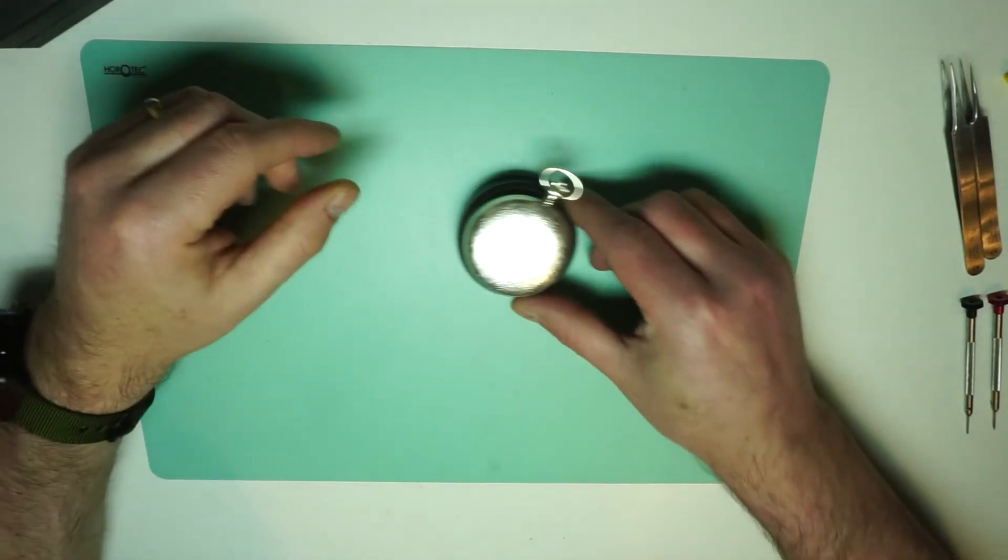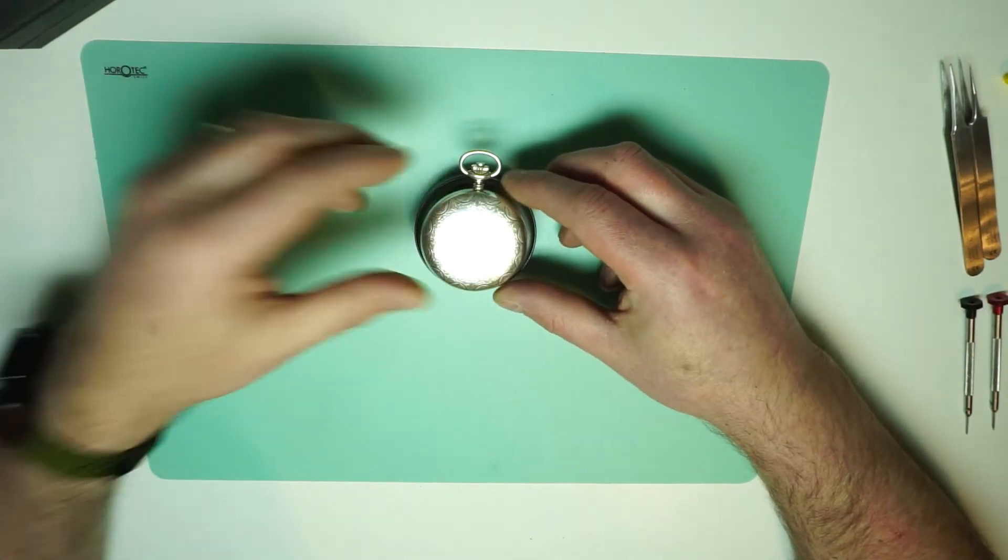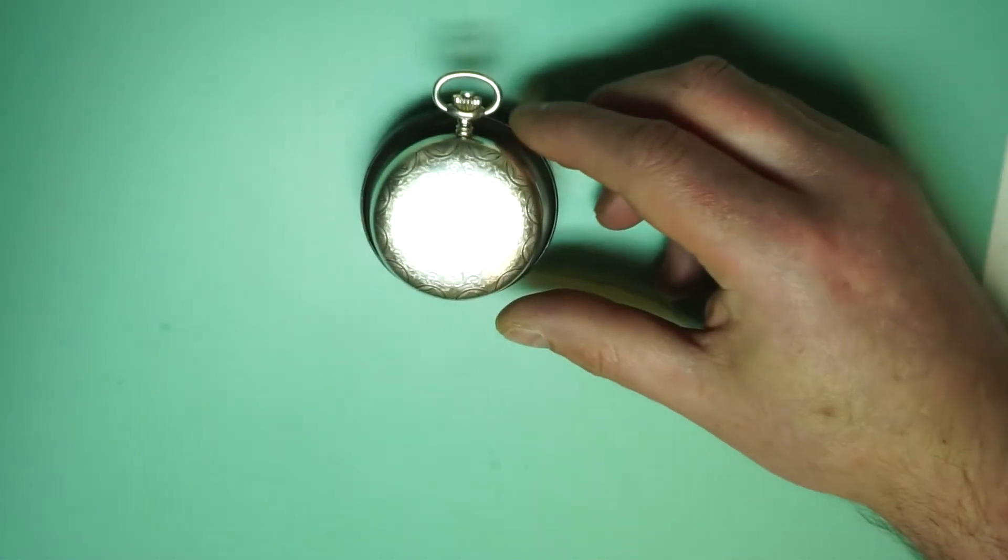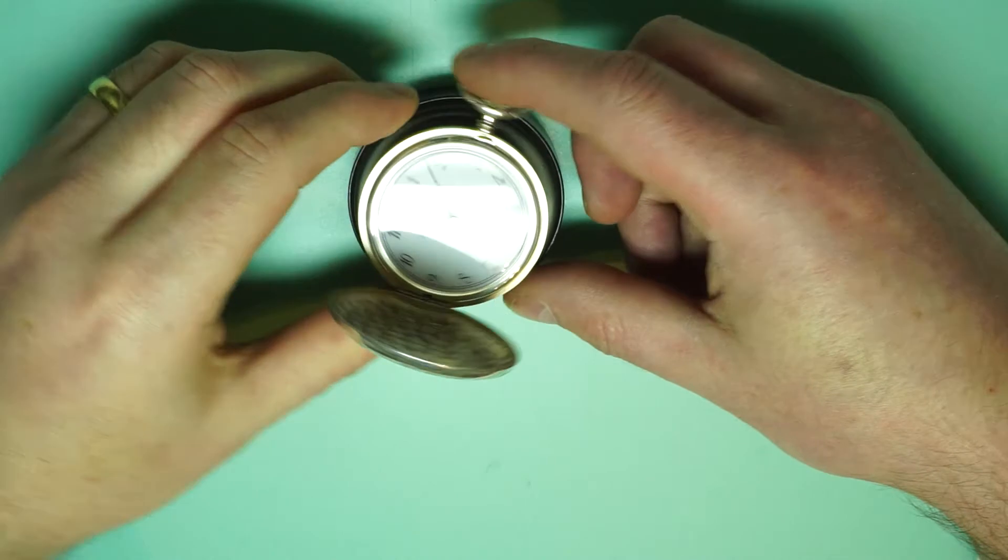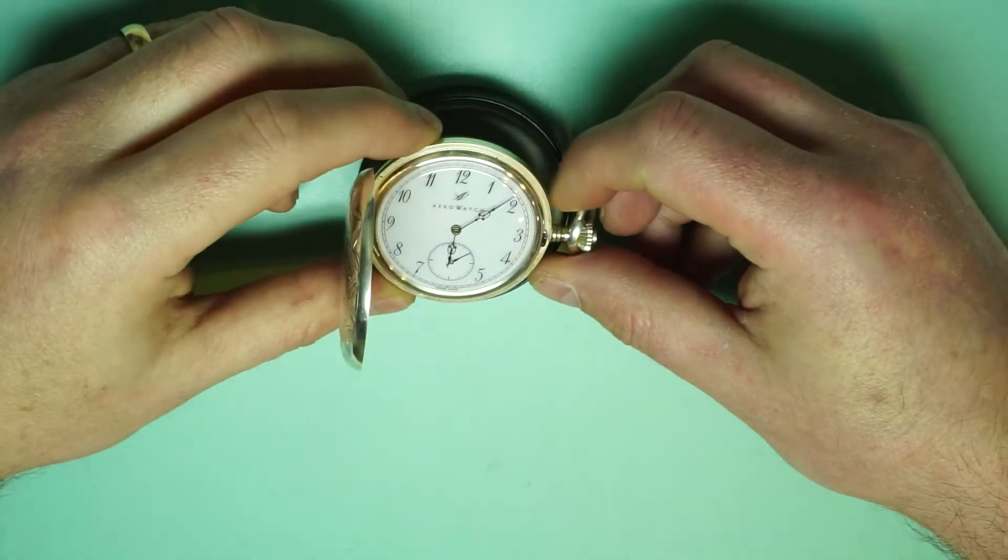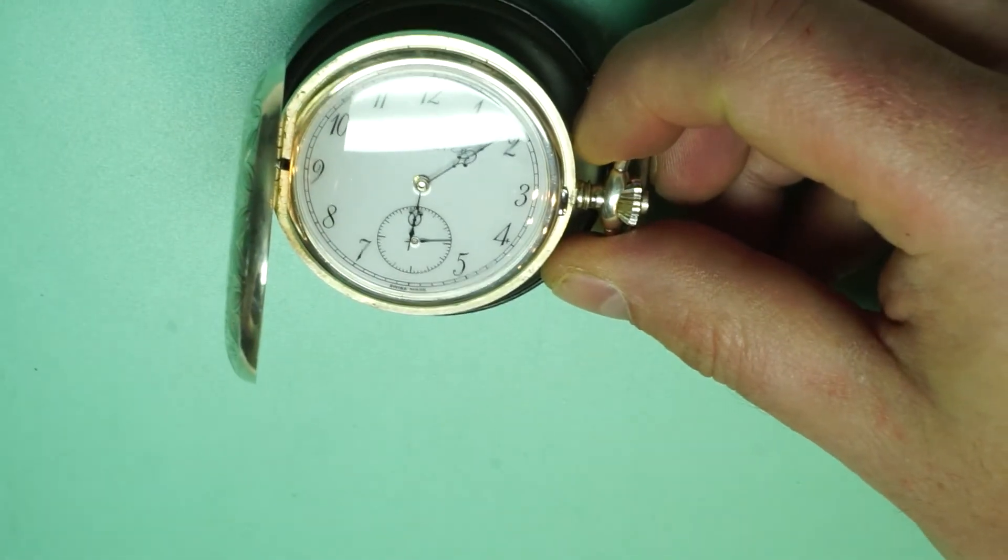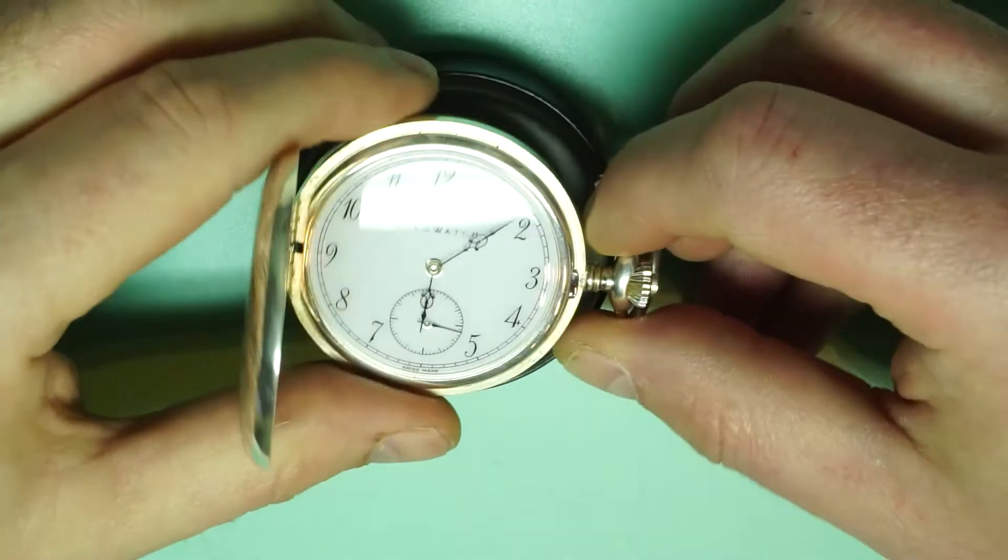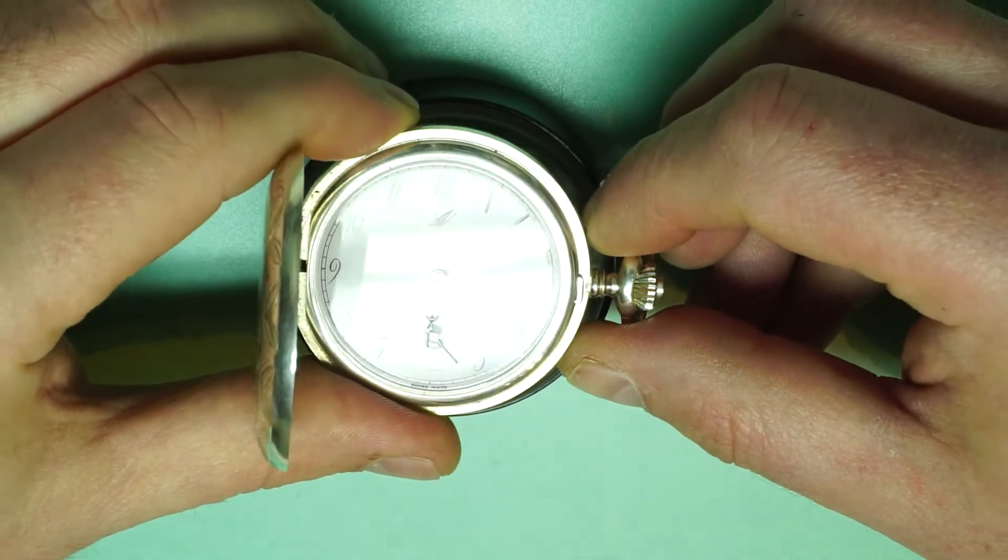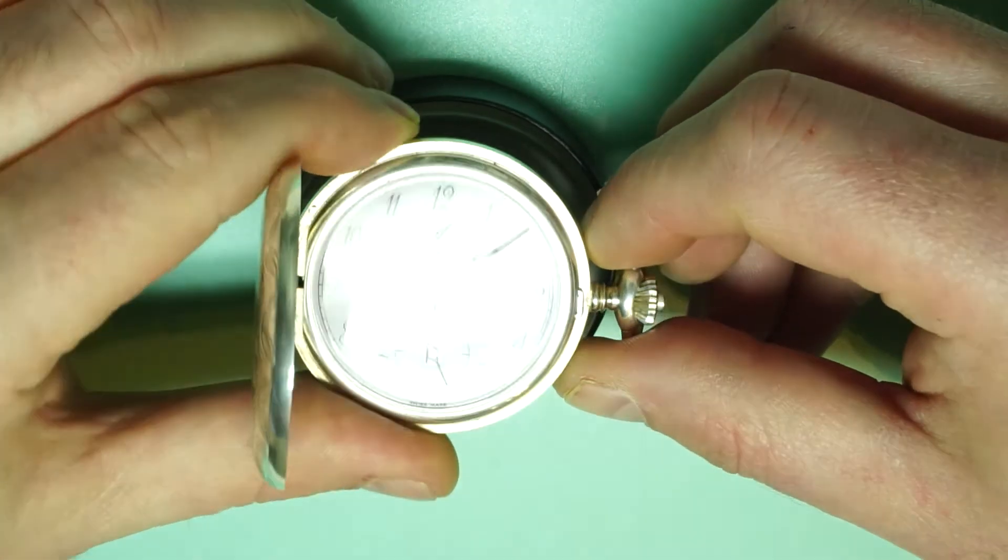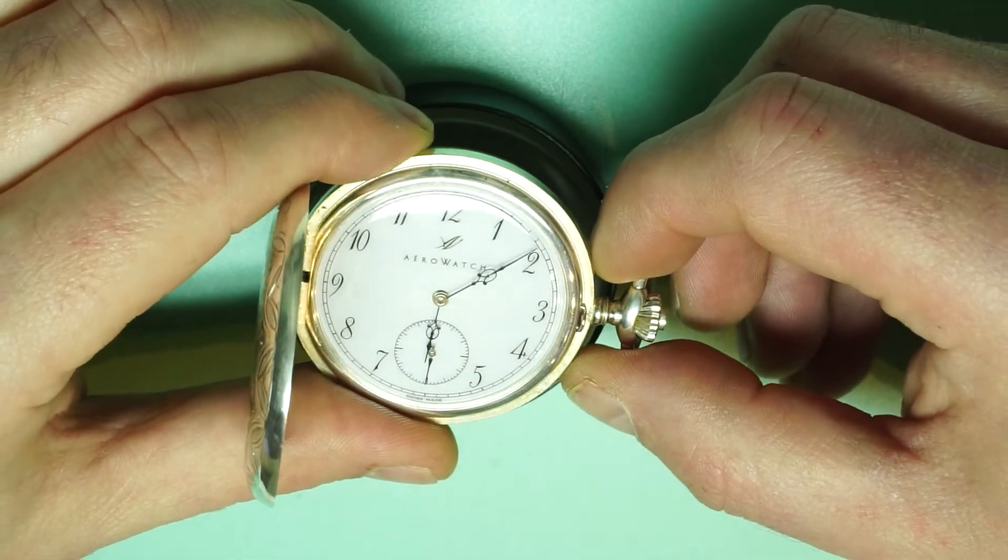So this particular model is one of the older models and it comes in a solid sterling silver case. This has a push button which opens up and we can see it has a nice white enamel dial with some decorative hands and black Arabic numerals and the makers name Aerowatch in the dead center.